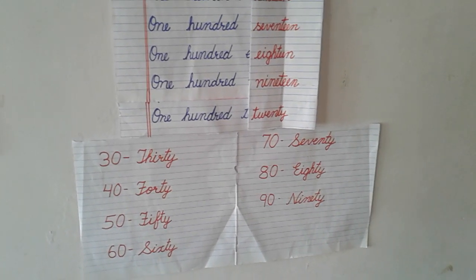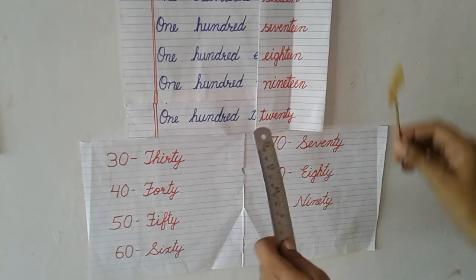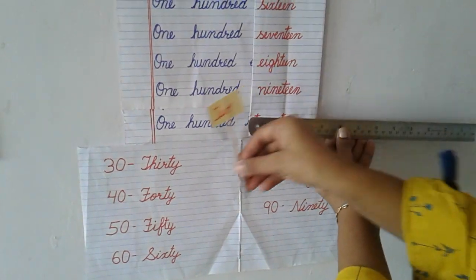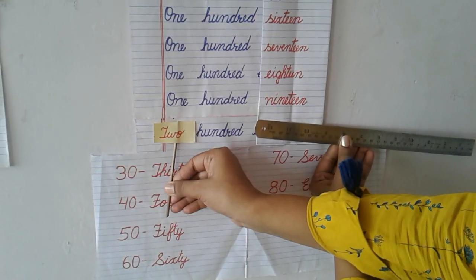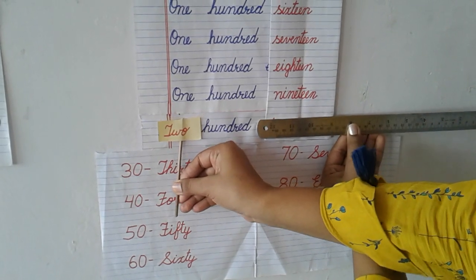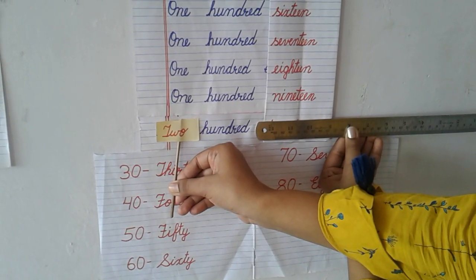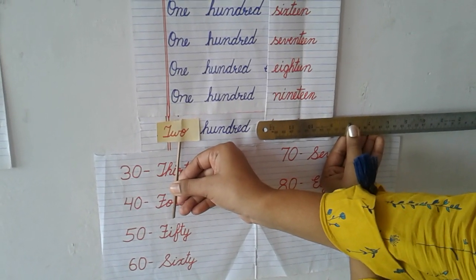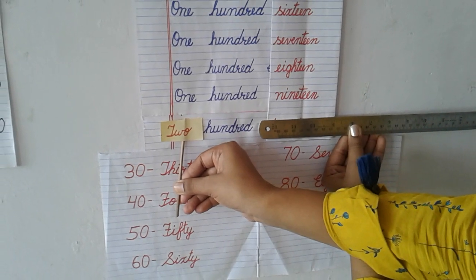And how are we going to write 200? Here you will write the spelling of TWO HUNDRED. TWO HUNDRED.